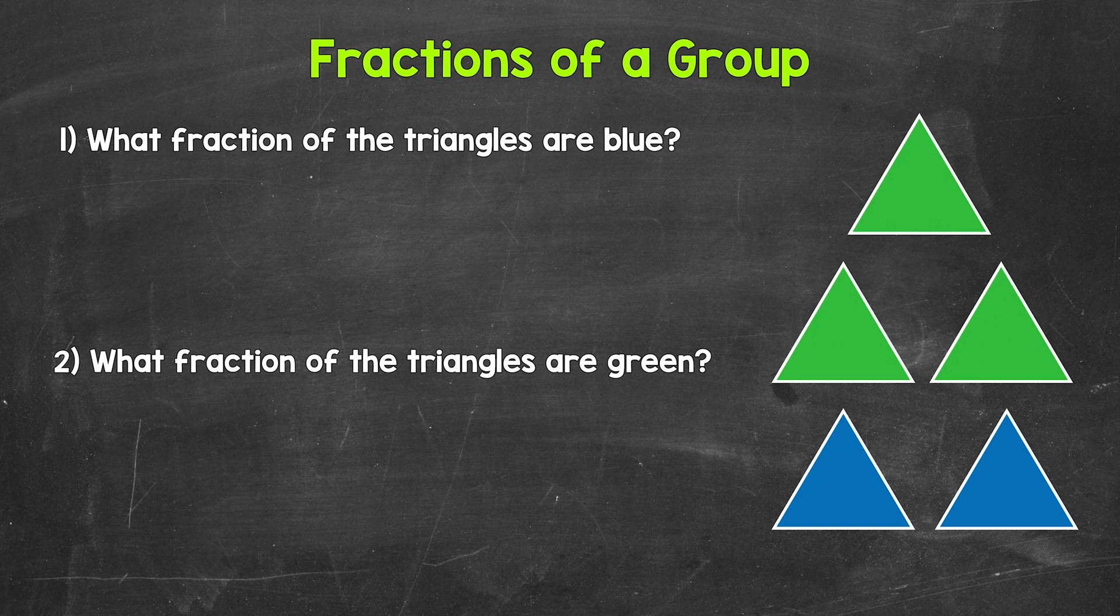Let's jump into our examples, starting with number 1, where we have what fraction of the triangles are blue. So for numbers 1 and 2, we have a group of triangles. This is our whole, our whole group. So for number 1, we need what part of that group is blue.